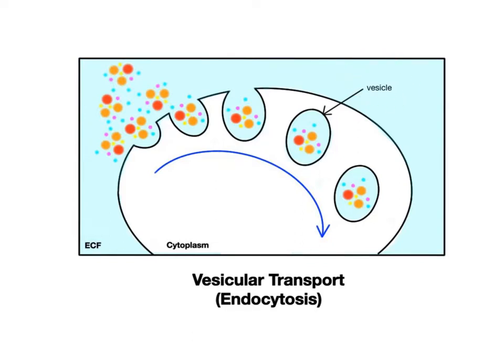Vesicles are tiny membrane-bound structures used to transport a wide range of chemical substances within a cell from one organelle to another, but they're also used to import and export chemicals into and out of cells. Vesicular transport is an active transport process that requires the cell to spend energy in the form of ATP.